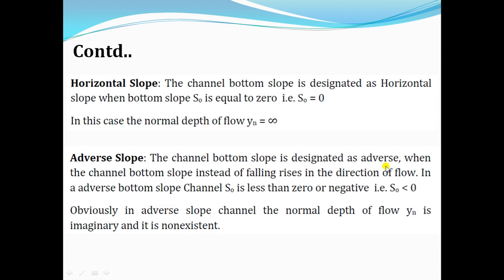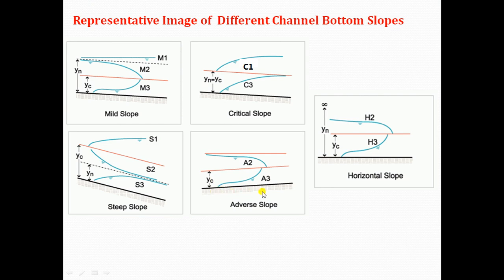Adverse slope: the channel bottom slope is designated as adverse when the channel bottom slope, instead of falling, rises in the direction of flow. In an adverse slope channel, S0 is less than 0, or negative. Obviously, in an adverse slope channel, the normal depth Yn is imaginary and non-existent. The slope of bed of channel is negative, S0 is negative, so the normal depth is imaginary or non-existent.